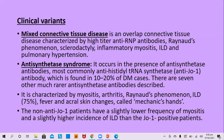Clinical variants include mixed connective tissue disease, an overlap connective tissue disease characterized by high-titer anti-RNP antibodies, Raynaud's phenomenon, sclerodactyly, inflammatory myositis, inflammatory lung disease, and pulmonary hypertension — mixed features between dermatomyositis and scleroderma. Antisynthetase syndrome occurs in the presence of antisynthetase antibodies; the most common is anti-JO1, found in 10–20% of dermatomyositis cases. There are seven other antisynthetase antibodies.